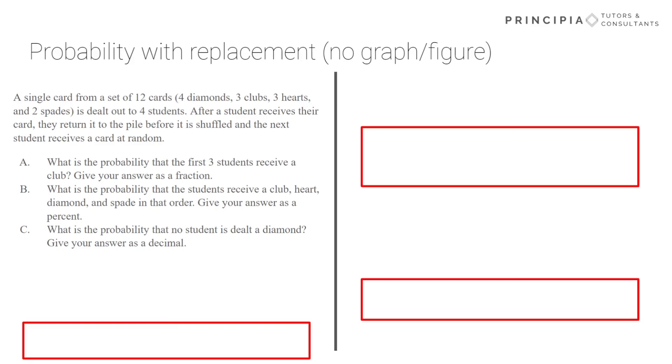All right, so part A is specifying it's three students. One and two and three get the same card. Since there's replacement, the probabilities won't change. And so it's an 'and' probability. Multiply everything out. Since drawing a club is a one in four probability, it's just one-fourth cubed to give us 1/64 for everything. The question wants us to answer as a fraction, so we're good to go.